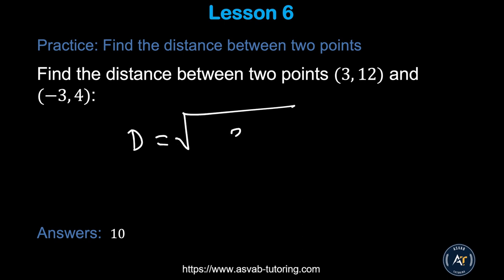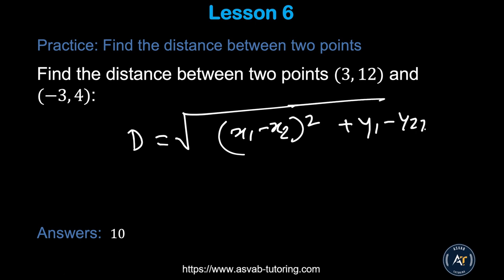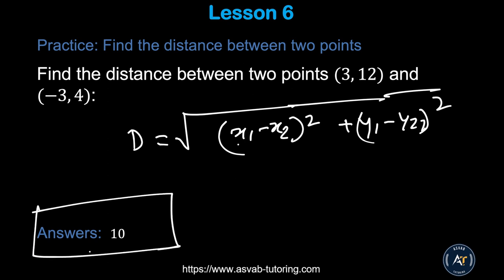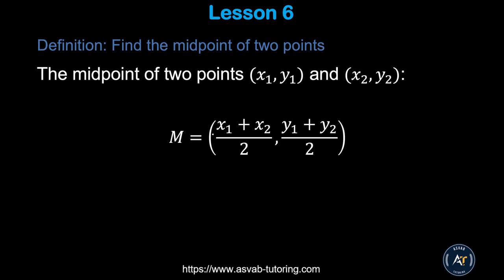Now try the practice problem yourself using d = √[(x1 − x2)² + (y1 − y2)²]. Note: it doesn't matter which point you call x1 or x2, because you're squaring the difference — a negative number squared is positive. Make sure you get the correct answer.